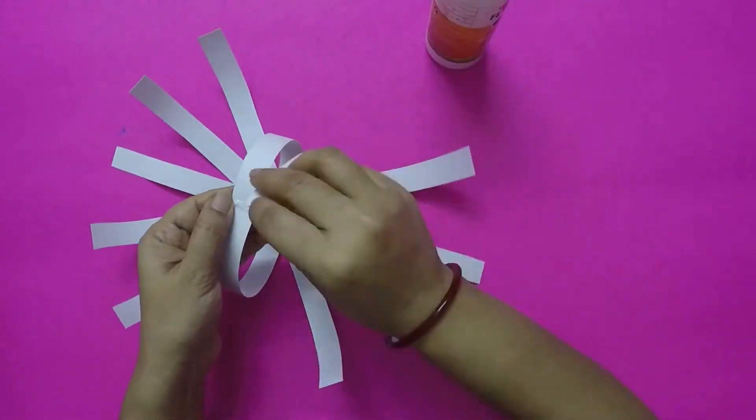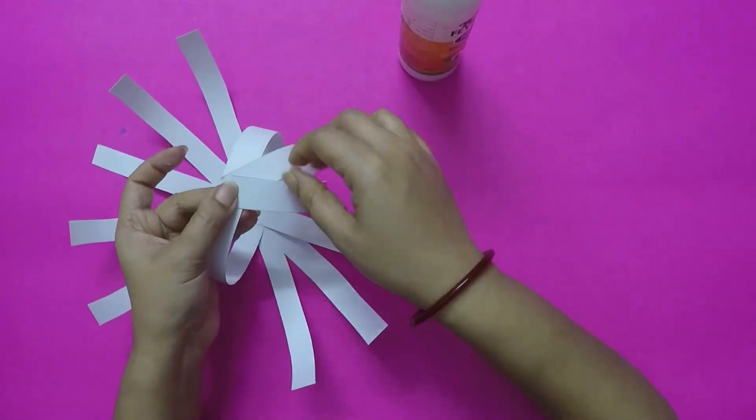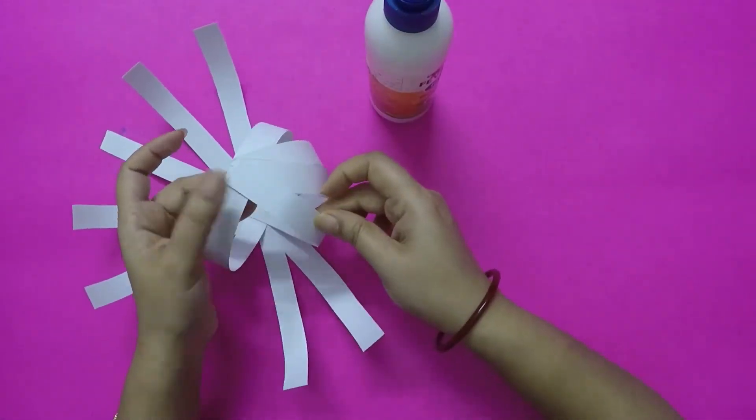Then paste the ends again to give the shape of a ball. This is the cockpit area.